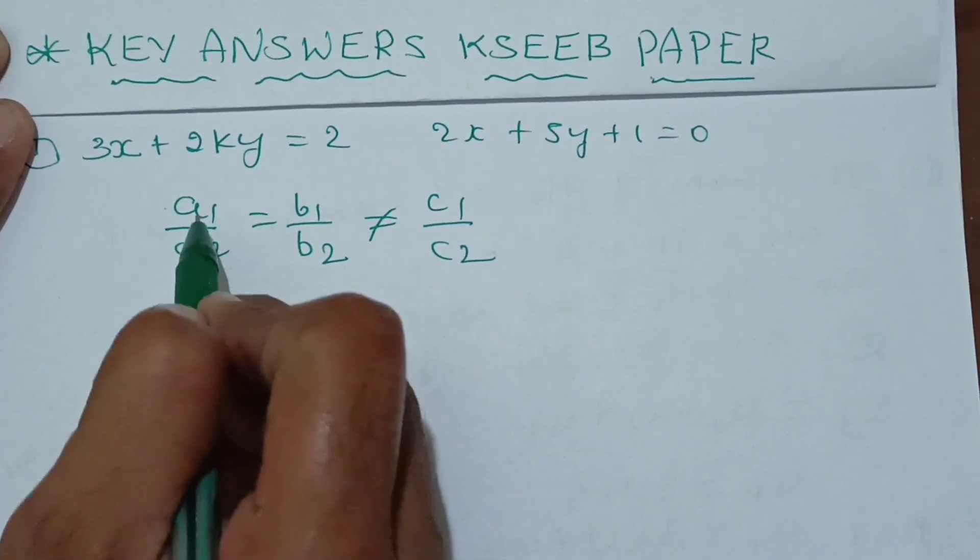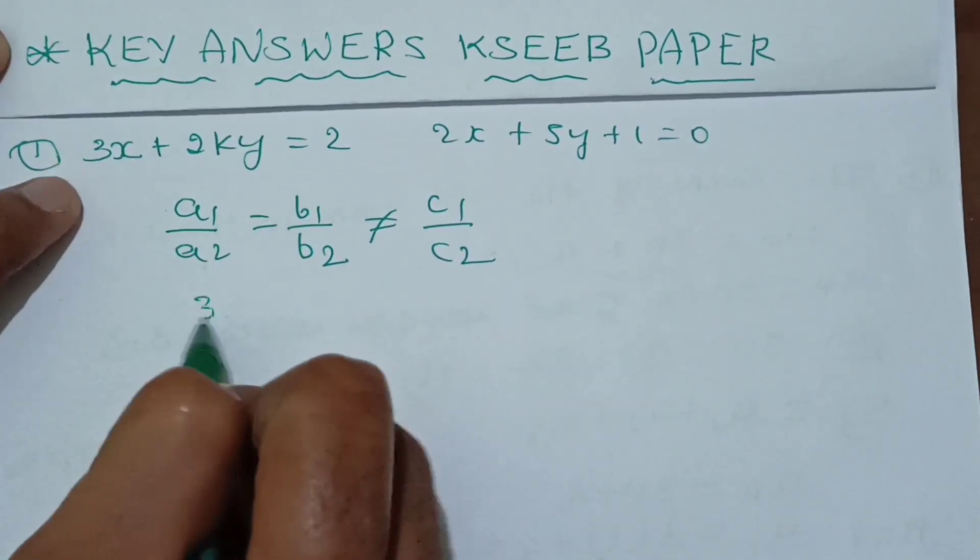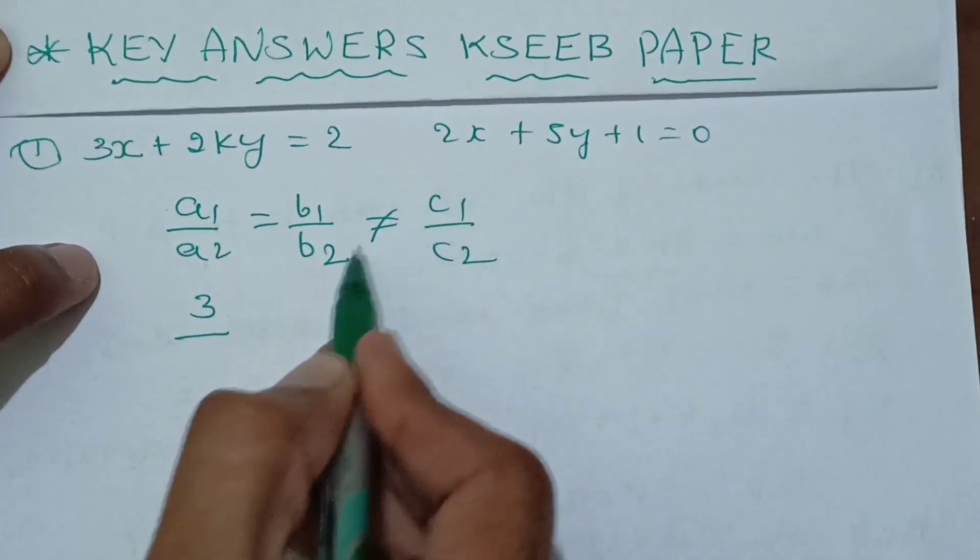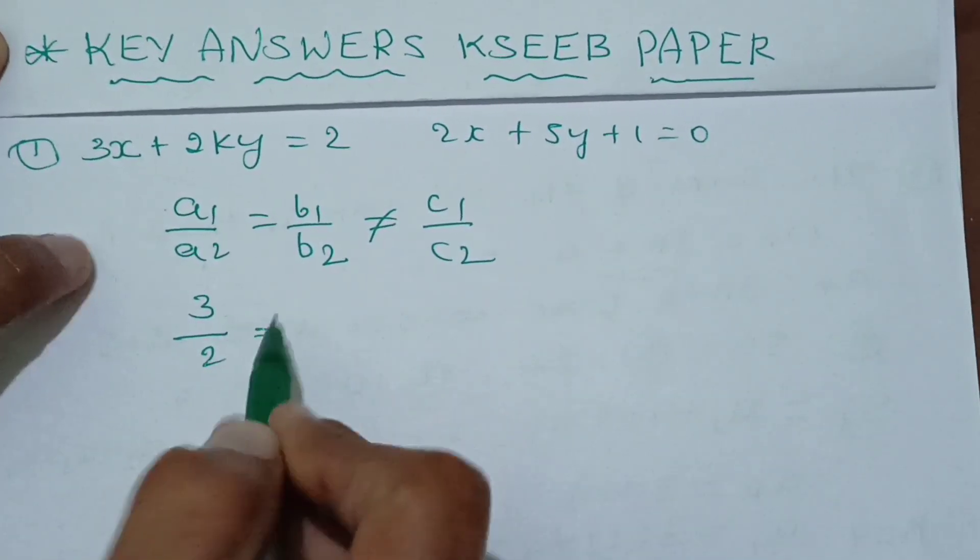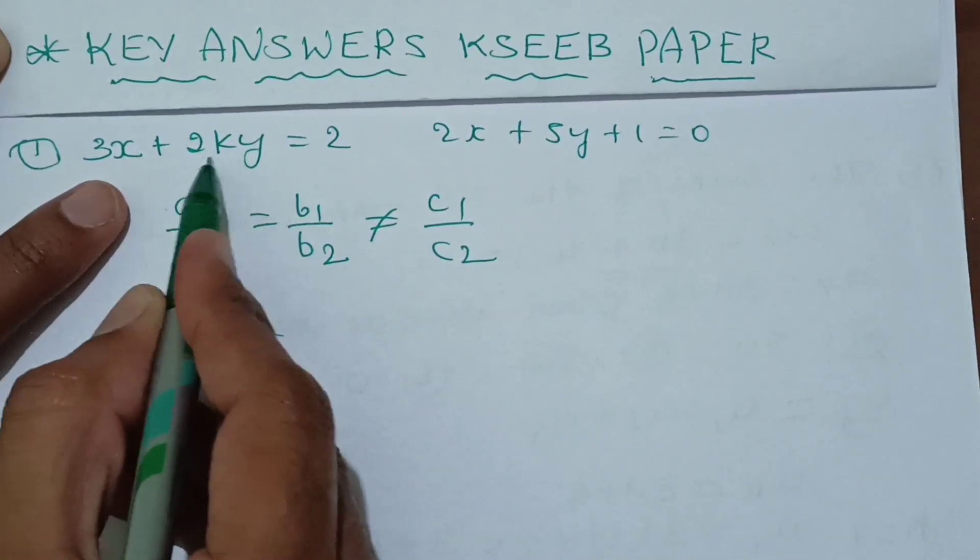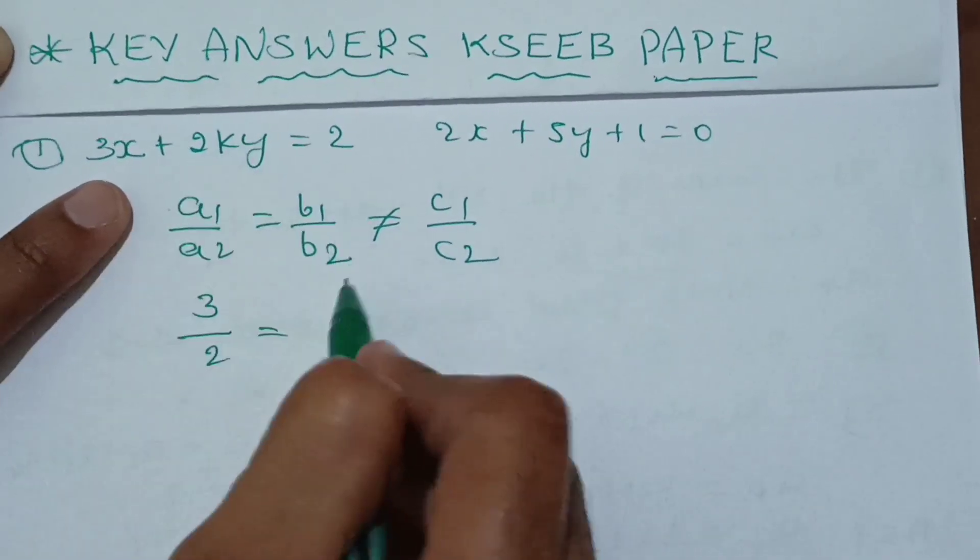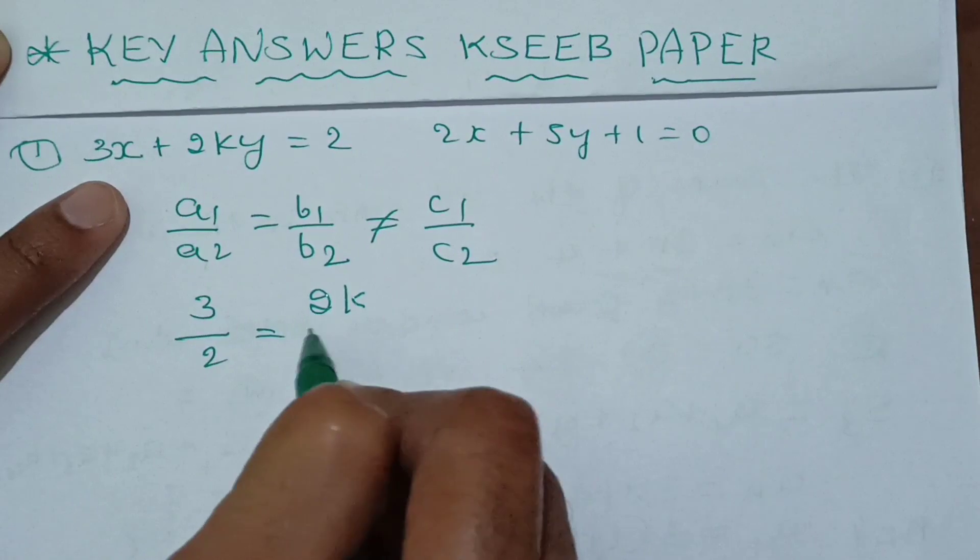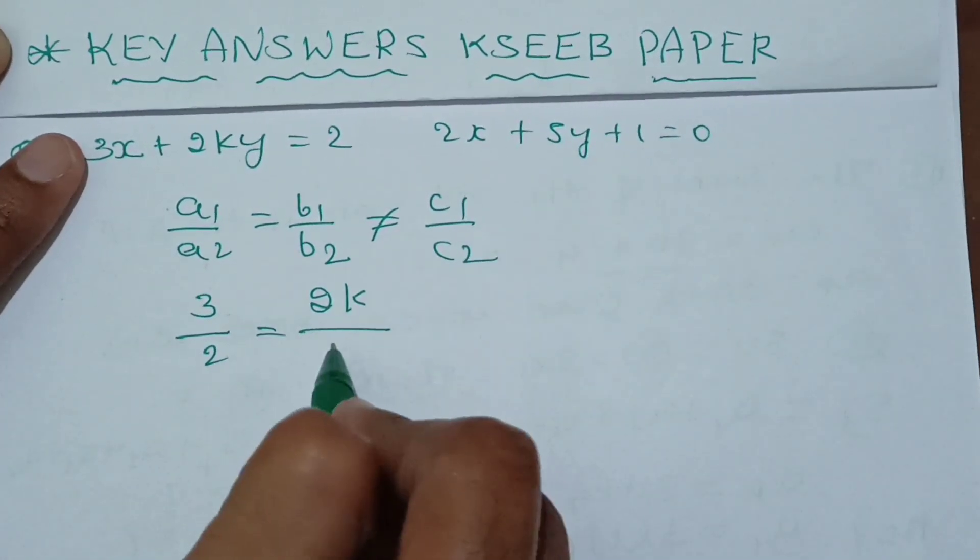A1 value is 3, so 3 divided by A2 value is 2. B1 value is 2K, so 2K divided by B2 value is 5.